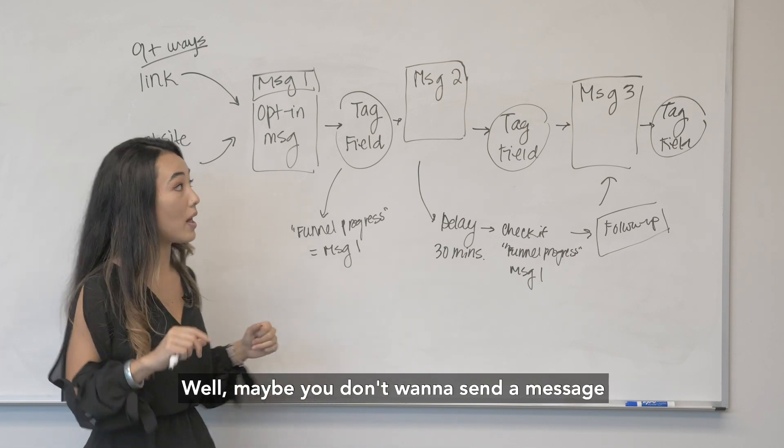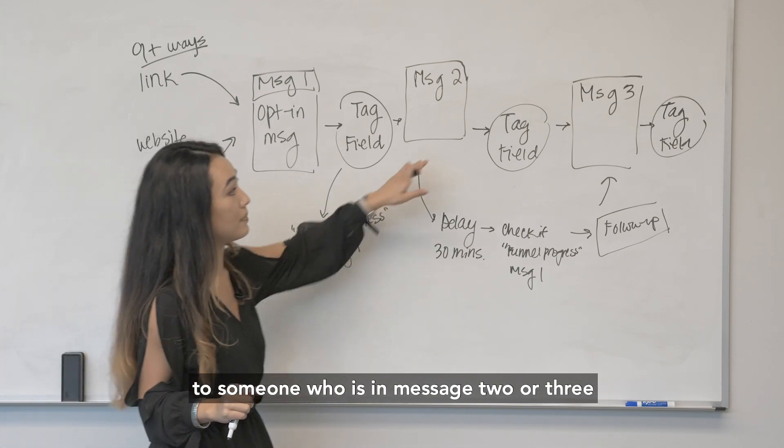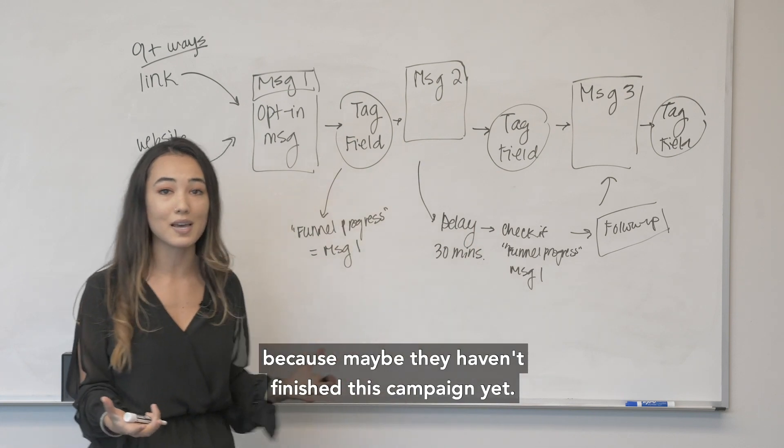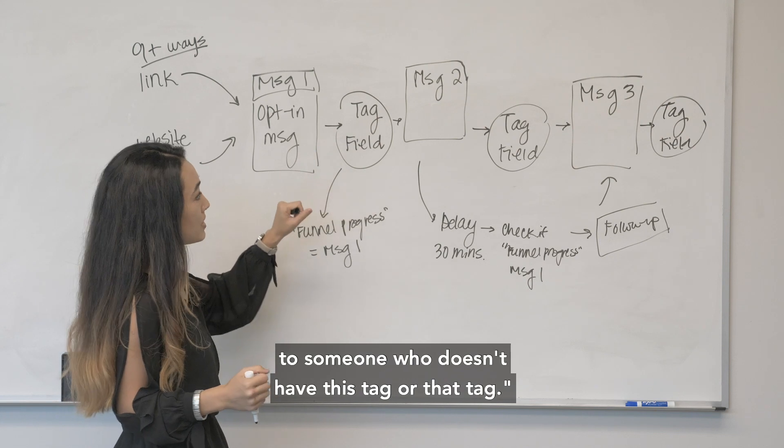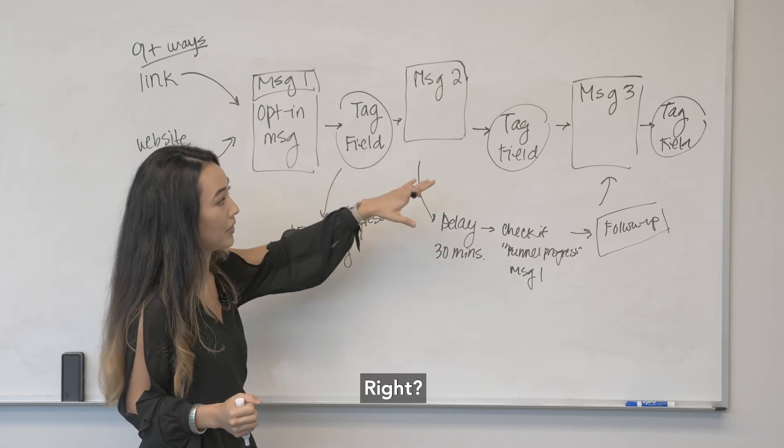Maybe you want to send out a message to your whole list. Well maybe you don't want to send a message to someone who's in message two or three because maybe they haven't finished this campaign yet. You can easily do that by tracking to know I'm only going to send a message to someone who doesn't have this tag or that tag.